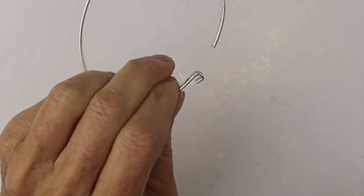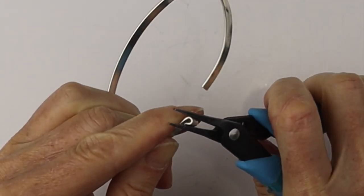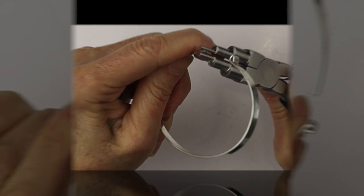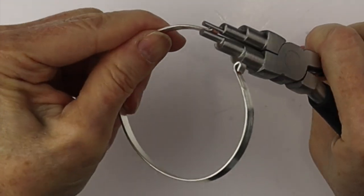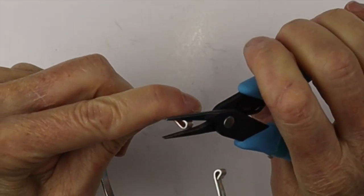Then we're going to just turn the end with the end of the looping pliers and we're going to pinch it down so it's nicely in place. Same on this side. We're just going to turn the end a little bit and pinch it in just to close that gap.